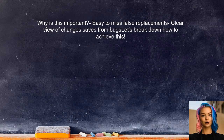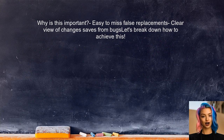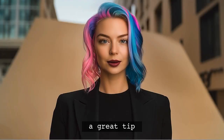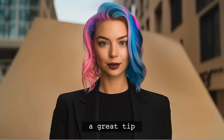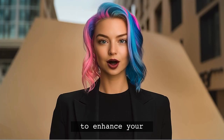Why is this important? When you replace words in your code, it can be easy to miss false replacements. Having a clear view of what has changed at the word level can save you from potential bugs and headaches down the line. Let's break down how to achieve this — and stick around, because at the end of this video I have a great tip that will enhance your git experience even further.